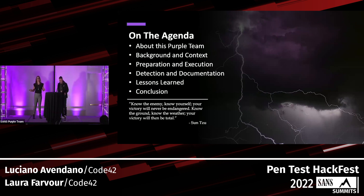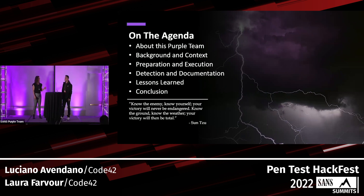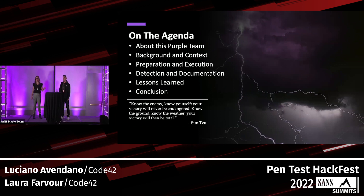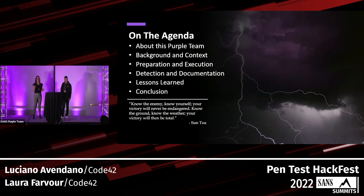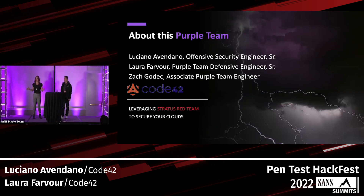The documentation tool we use is one that Luciano found from a SANS course called VECTR — V-E-C-T-R — and it's really cool because it maps the whole attack chain of the techniques you input that you're going to be measuring during your purple team exercise.